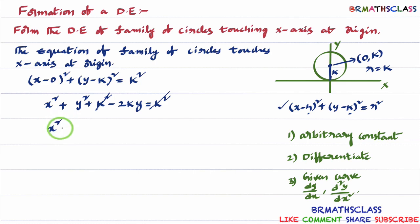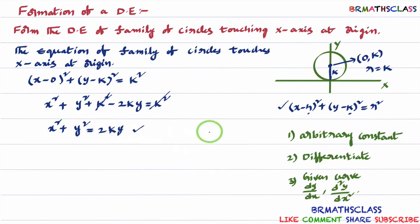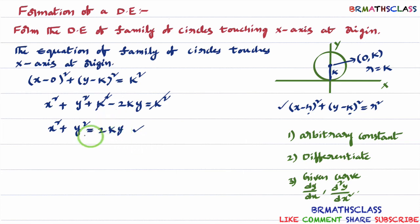After simplification, x² + y² = 2ky. This is the equation of a circle touching x-axis at origin. Since k is an arbitrary constant, this is the equation for the family of circles which touches x-axis at origin. Now we need to form the differential equation.